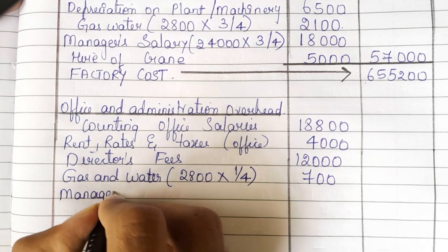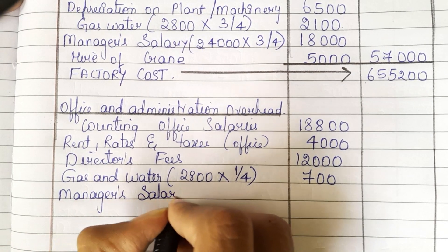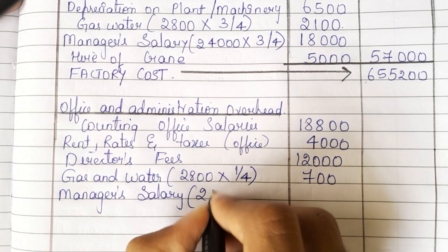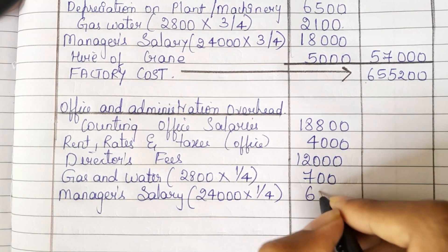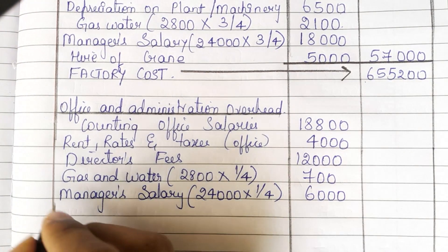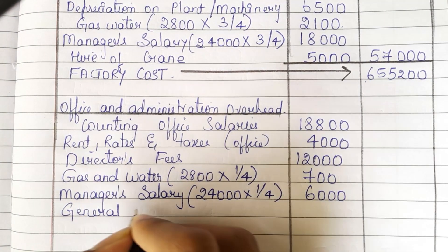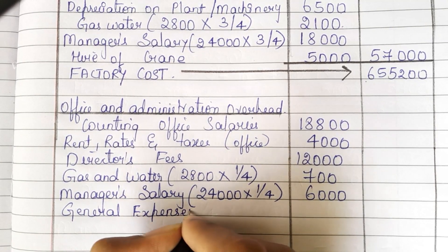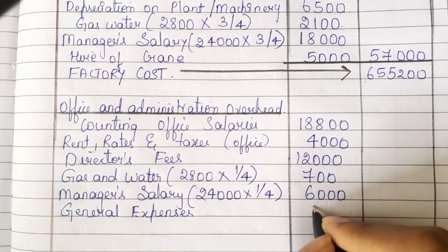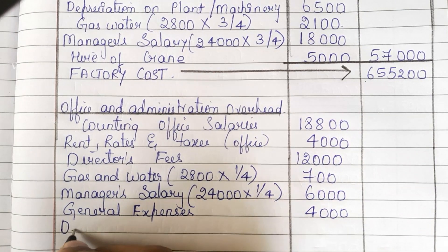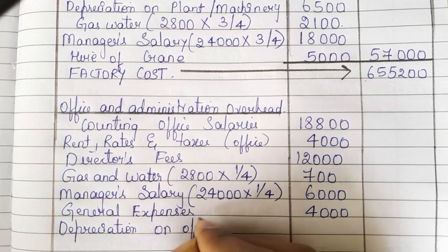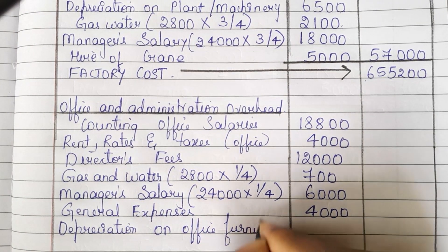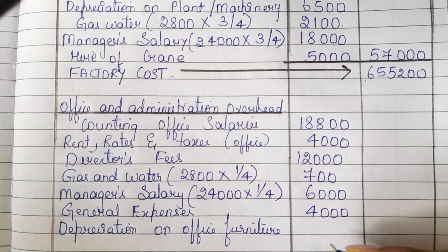Then we are having manager's salary. Total manager's salary is 24,000, but for office overhead it is only one-fourth — when we multiply, you get 6,000. Then we are having general expenses: 4,000. Then we are having depreciation on office furniture: 1,000.